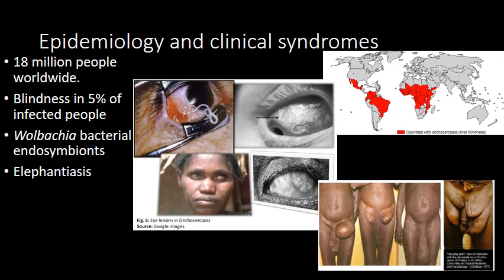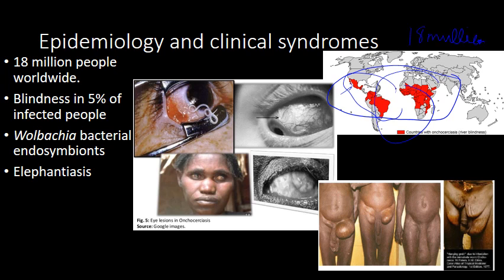We don't tend to see Onchocerca in the United States, thankfully, but it is actually endemic to many parts of Africa and is also found in the Congo and Volta River basins. We also see it in South America, with some cases in Mexico each year. There are about 18 million cases of Onchocerca each year, and it causes blindness in about 5% of infected people — so this is not uncommon.